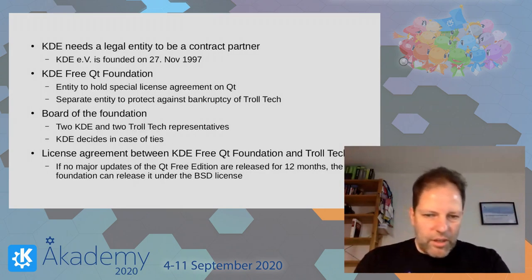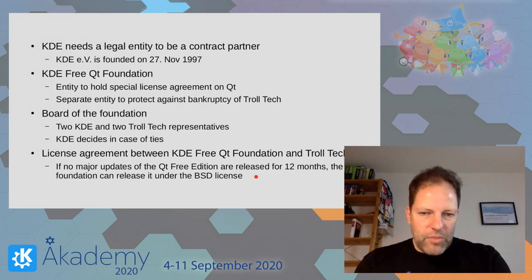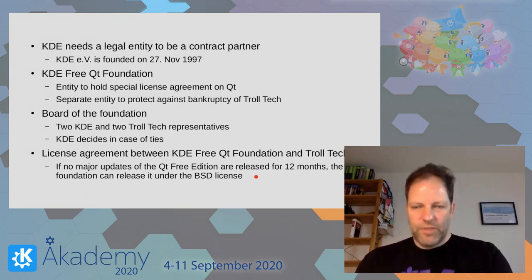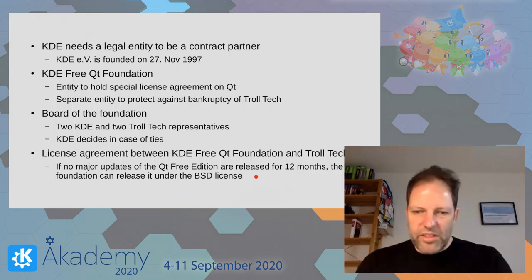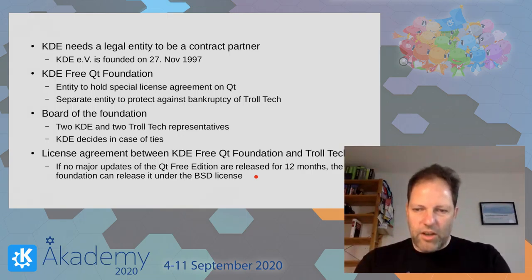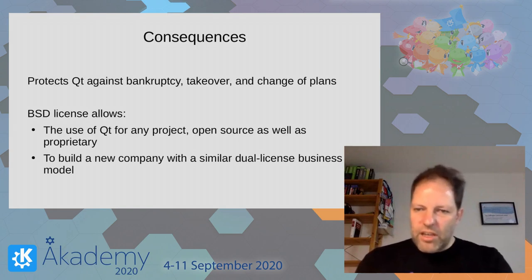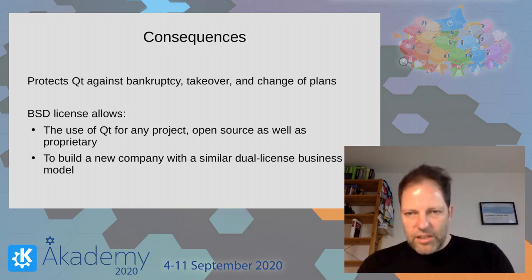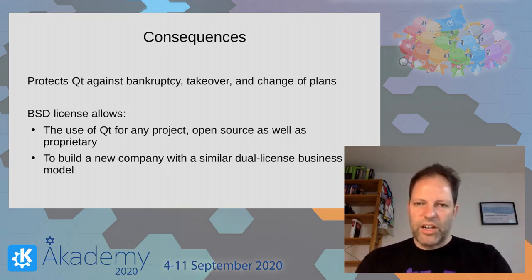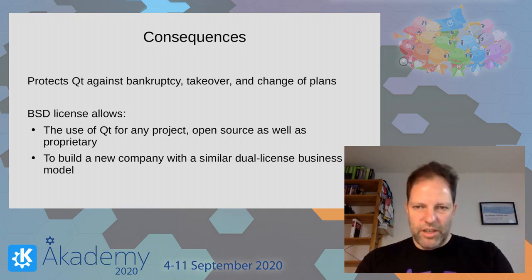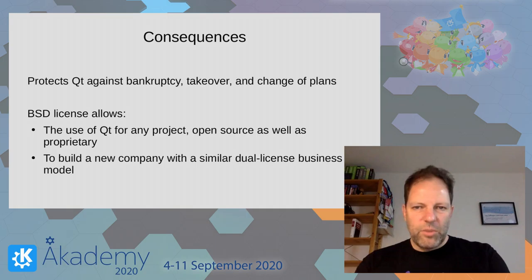The primary tool is that the license agreement states: if no major updates of the Qt Free Edition happen within five months, the foundation can release the Qt Free Edition under the BSD license. The consequences: it protects Qt against bankruptcy, takeover, and change of plans, because under the BSD license you have permission to use it for all kinds of projects — open source as well as proprietary. It also allows building a new company with a similar dual licensing business model, which wouldn't be possible with the GPL.